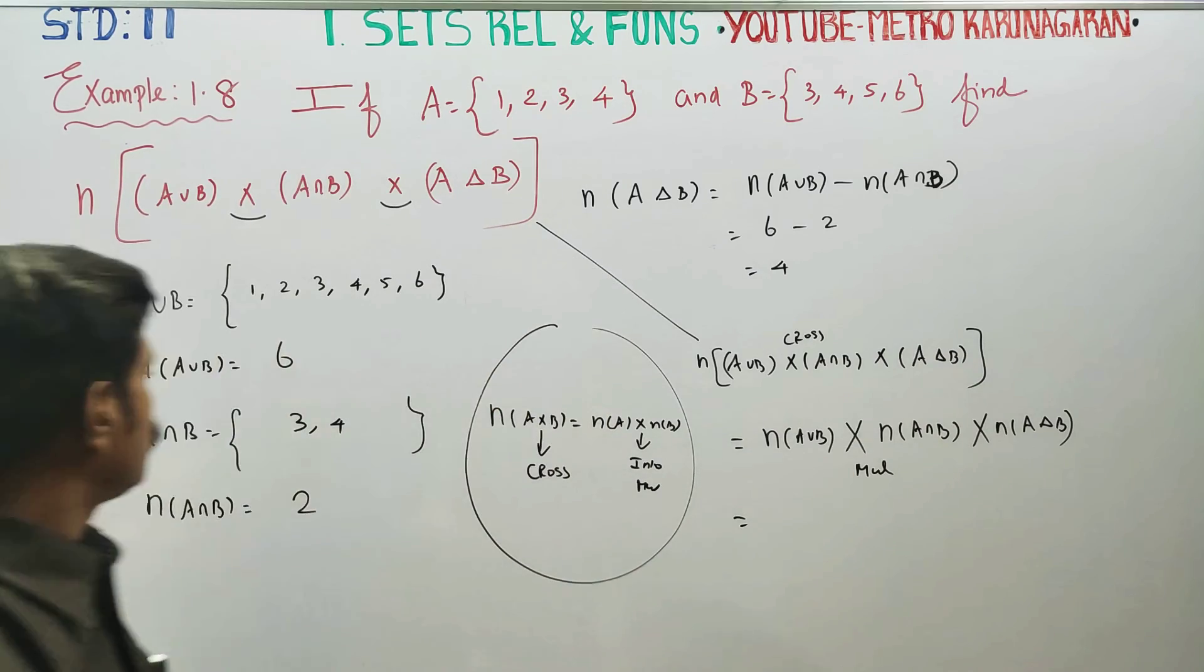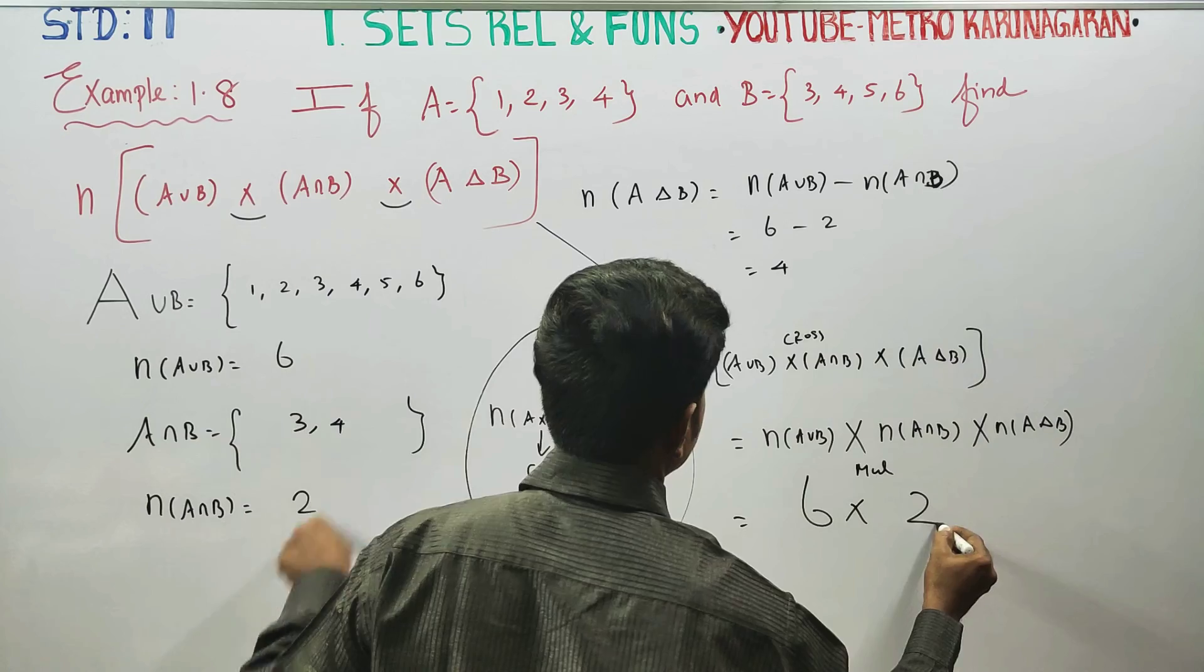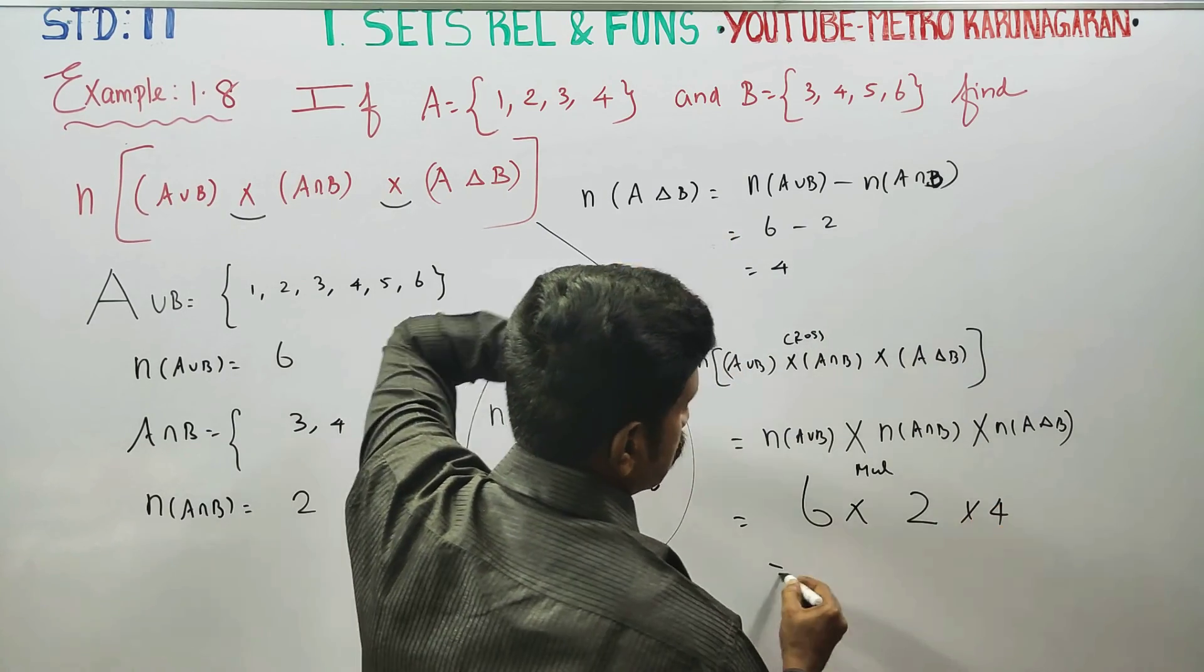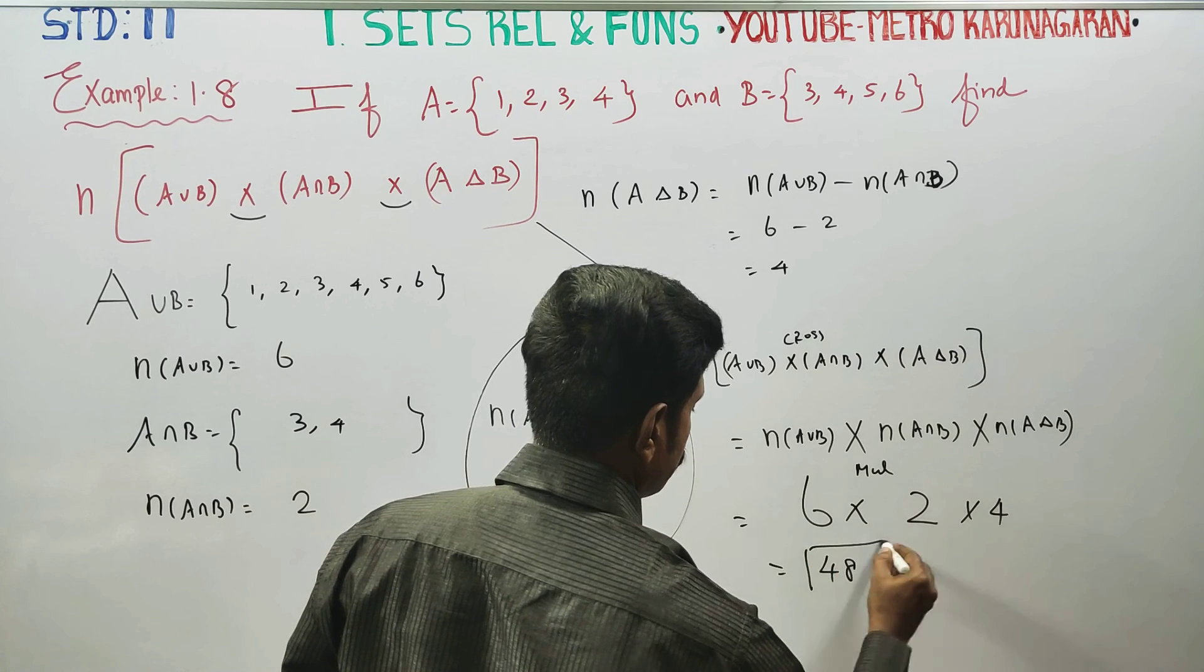N of A union B is 6, n of A intersection B is 2, so it is 4. 6 times 2 is 12, 12 times 4 is 48 will be your final answer.